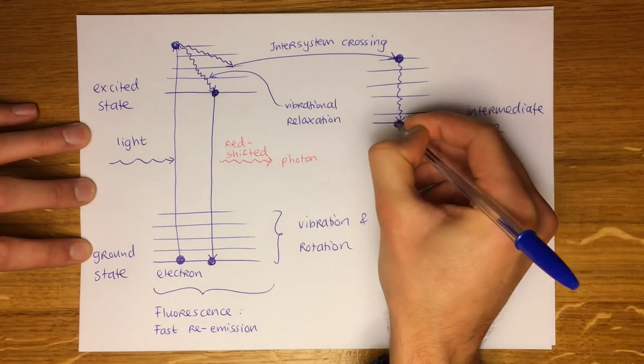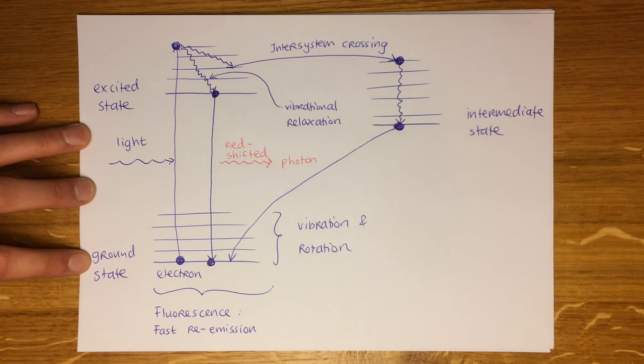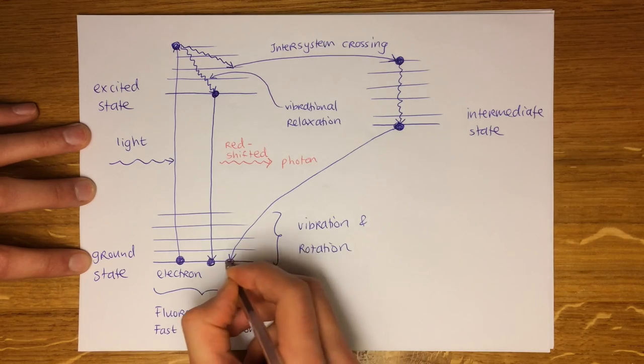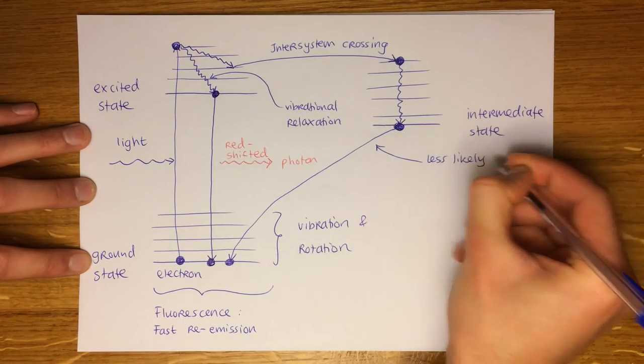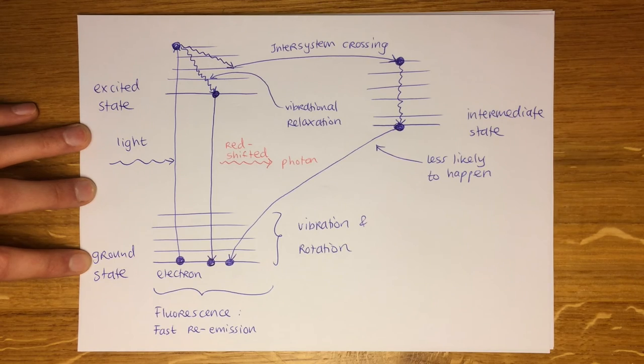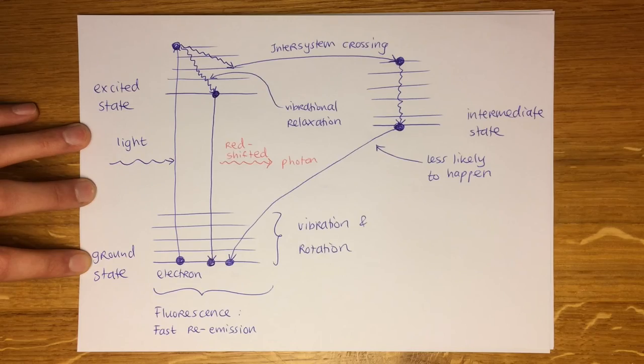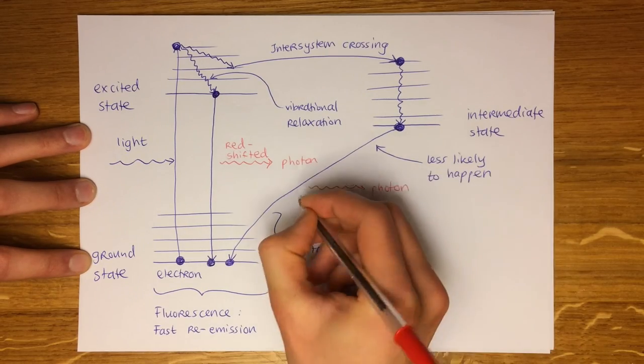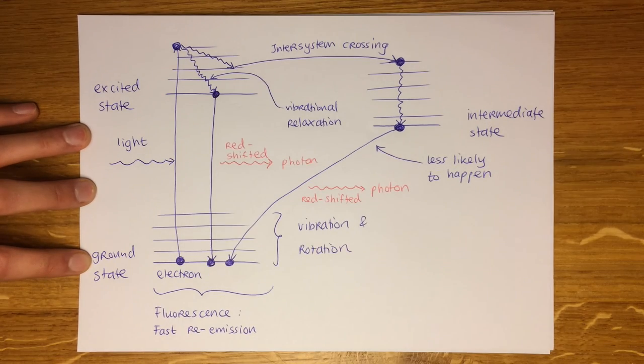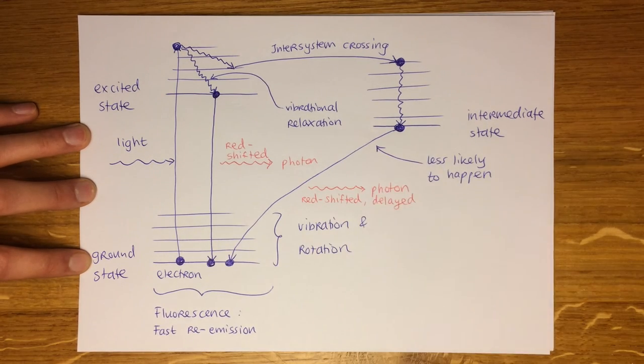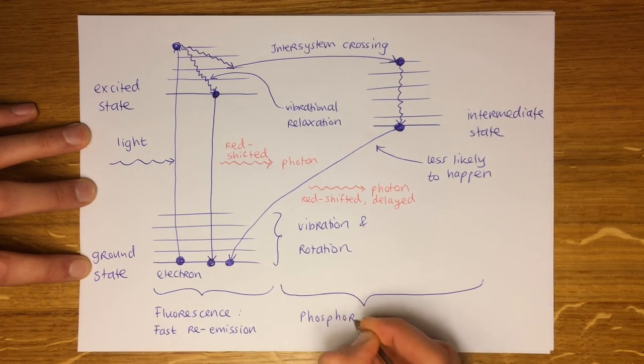The route down to the ground level from this state is hindered by an additional energy barrier making it much less likely to happen than in fluorescence. This causes the electrons to get stuck here for a while before they can return back to the ground state. This leads to emission of photons from the molecule even after the incident light has been turned off. The second route is called phosphorescence.